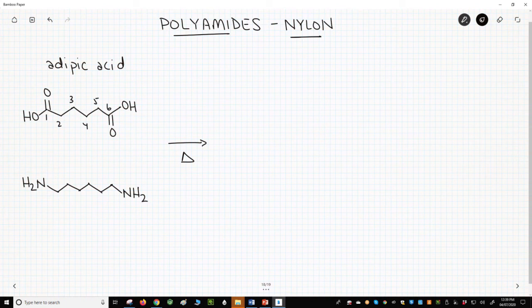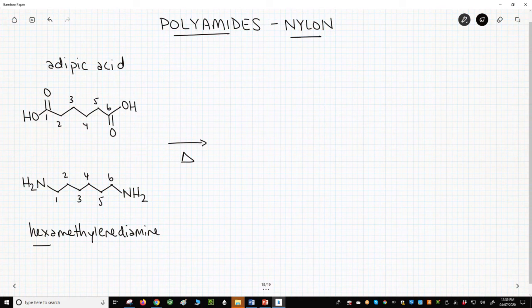The other monomer for this copolymer is called hexamethylenediamine. Hexamethylenediamine has six carbons.